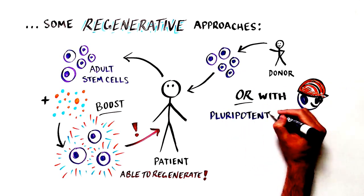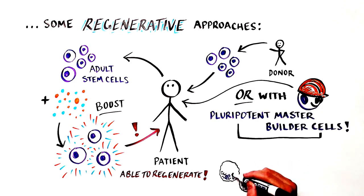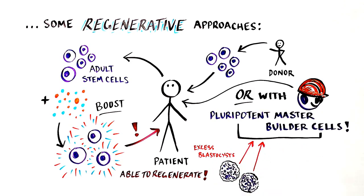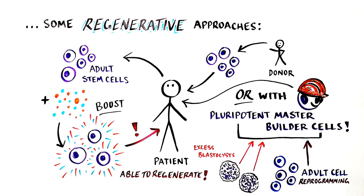It may also involve using pluripotent master builder stem cells, which can be derived from two sources: ethically generated excess blastocysts from in vitro fertilization, donated with informed consent of the donor, or through a technique that reprograms adult cells to become pluripotent, a process that produces induced pluripotent stem cells, iPS cells.